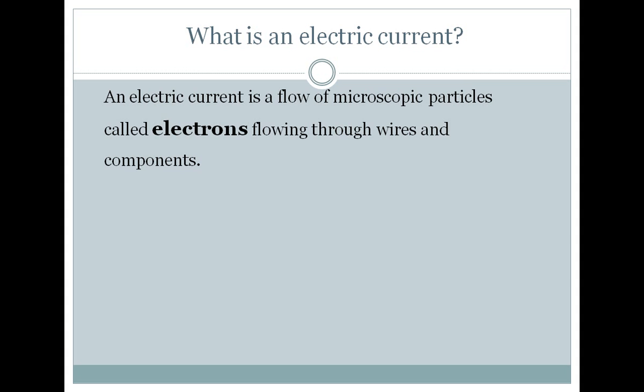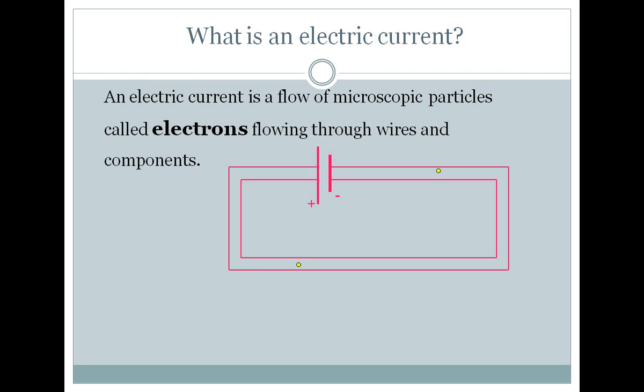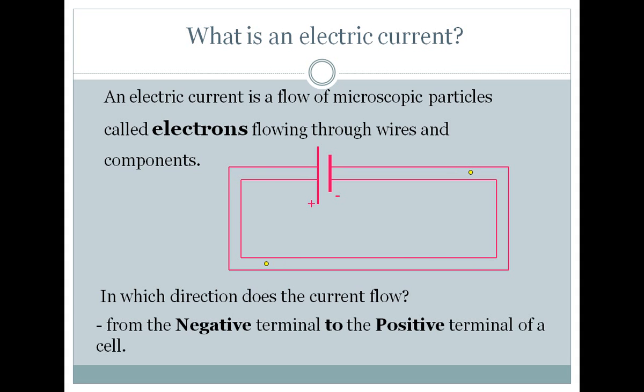So what is electric current? It's specifically the flow of small subatomic particles called electrons. Here is a diagram showing you the movement of electrons through the wire. Now which direction is the current flowing? This is really important for you to know. It actually moves from the negative to the positive end of the terminal, always in that direction.